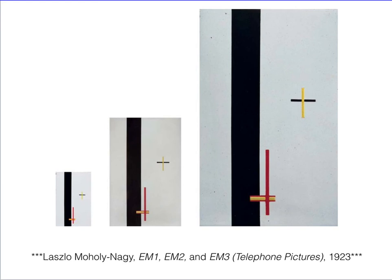These are his Telephone Pictures from 1923. I'm trying to show you the appropriate scale of EM1, EM2, and EM3. They are basically identical in terms of the way they're laid out and the composition, but obviously different in terms of scale — one is quite small, one is medium-sized, and one is larger.